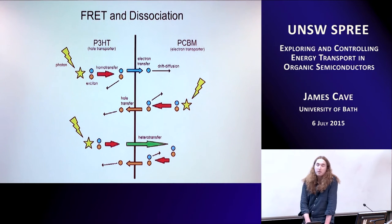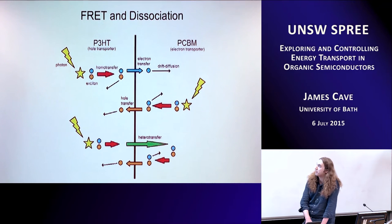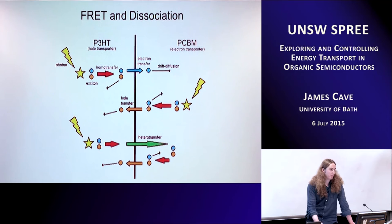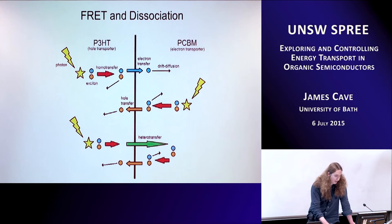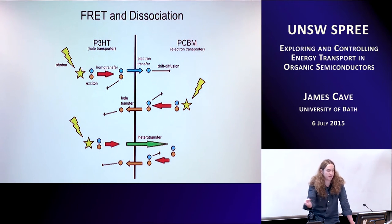So what do we do with our exciton? I'm using P3HT as the hole transporter and PCBM as the electron transporter — two materials commonly used in organics. One way is homotransfer, where maybe a photon strikes here and creates an exciton, which then transfers within the same material — homo meaning same. It can hop to an interface and then dissociate there.